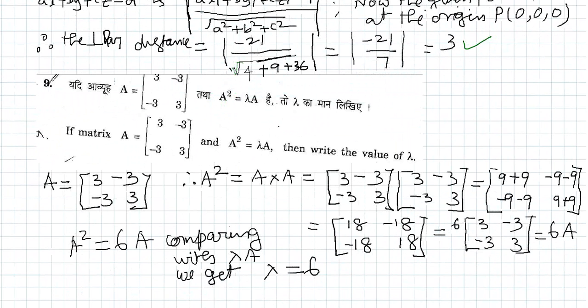Now here matrix is given, a 2 by 2 matrix which is A equals 3 minus 3 minus 3 plus 3, and it is given A square is lambda A and we have to find the value of lambda.